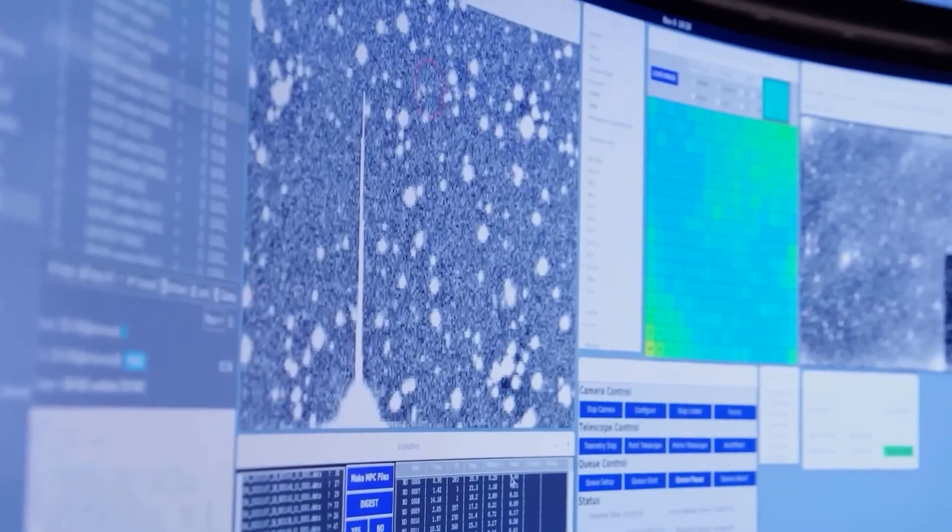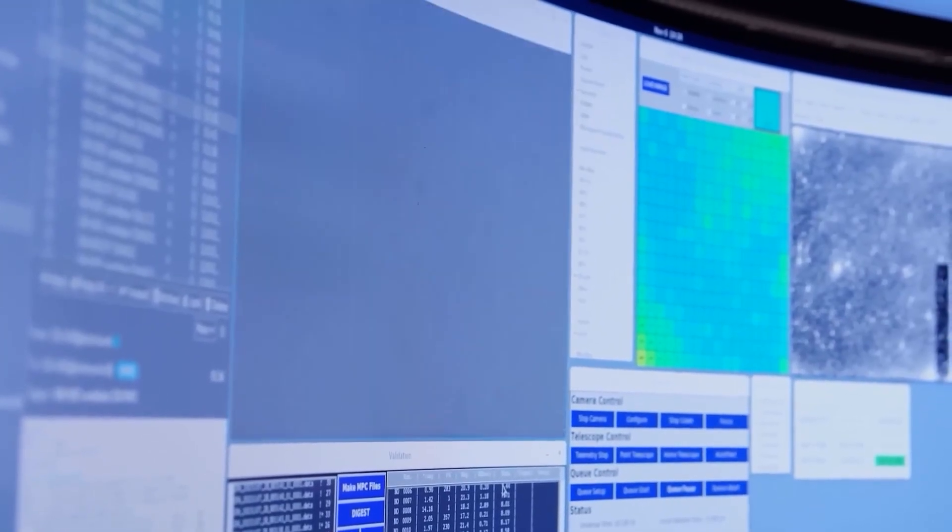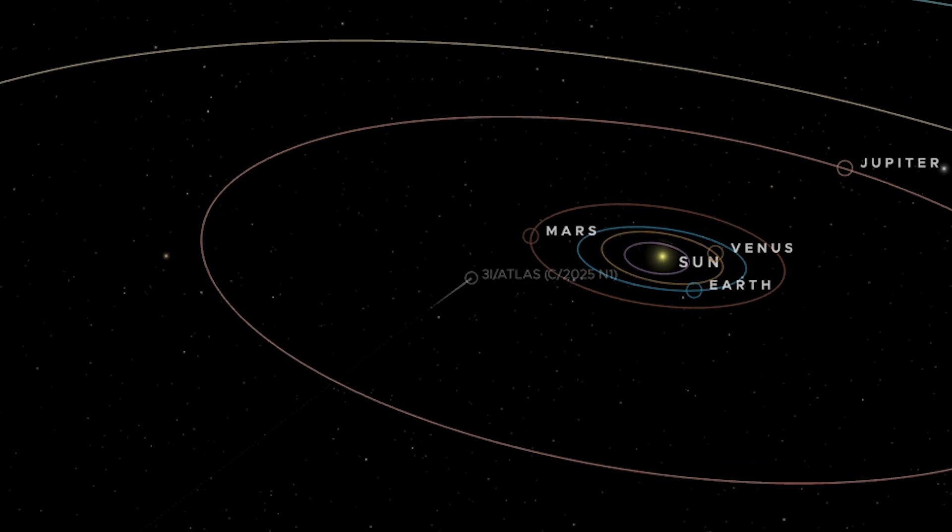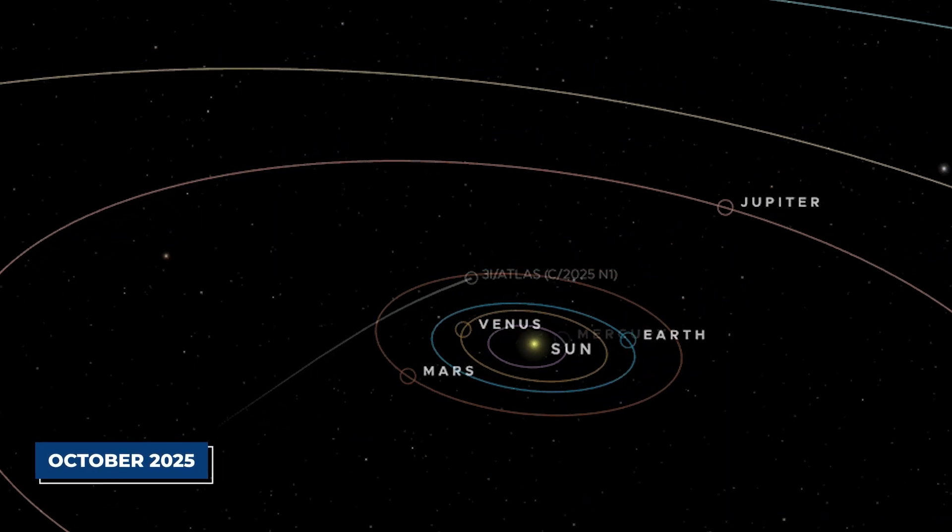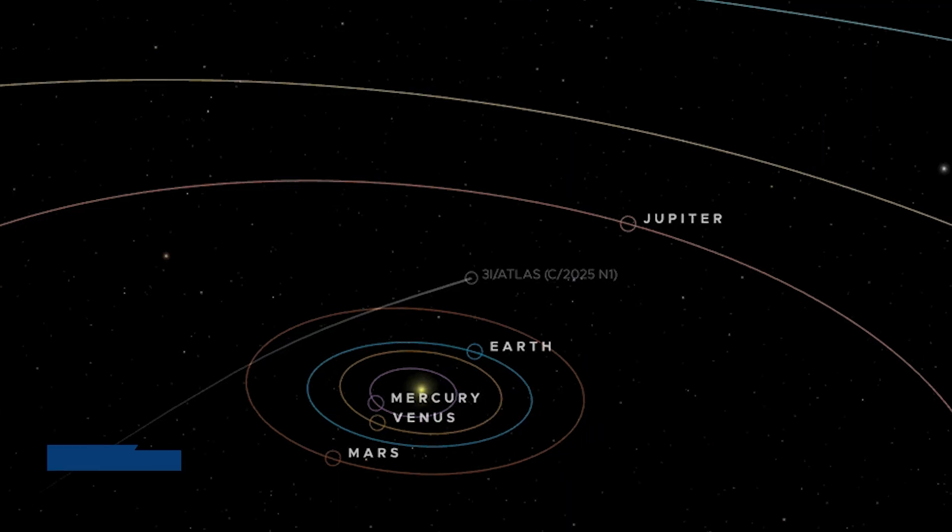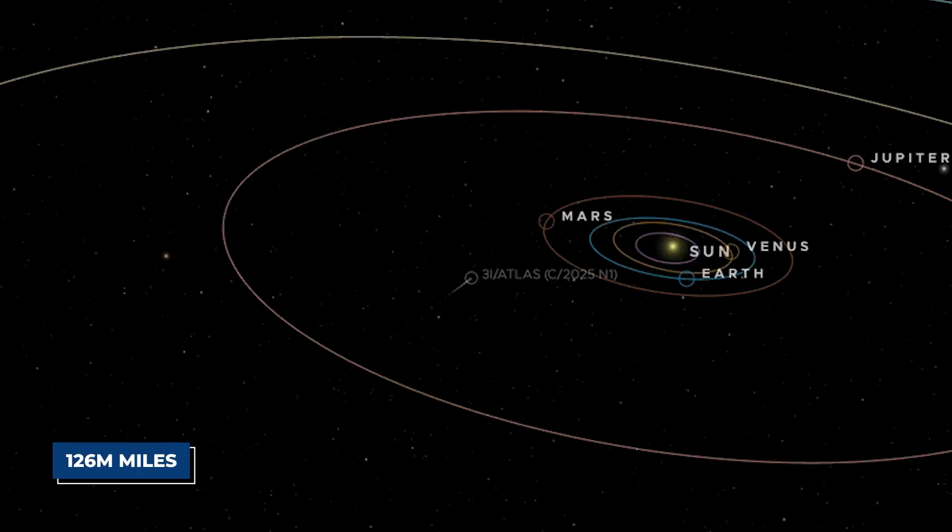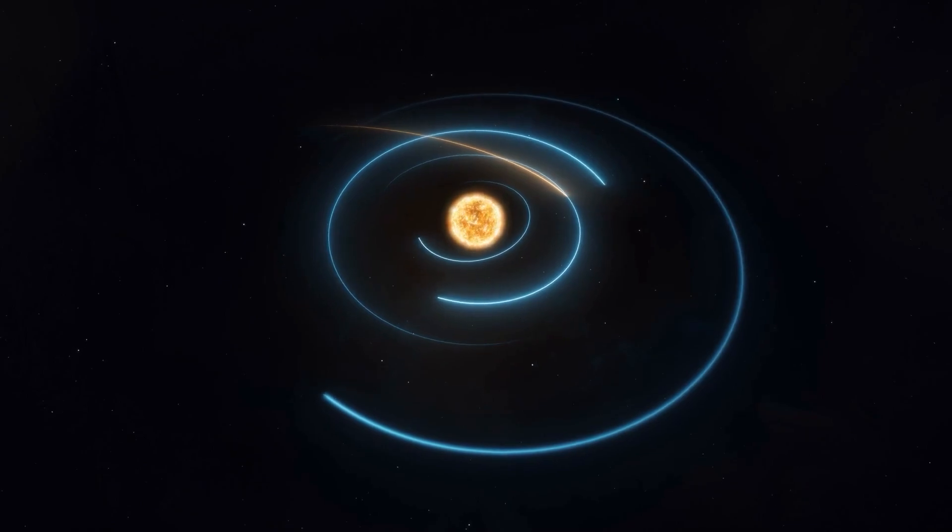It offered a rare chance for scientists to study material from outside our own stellar nursery. Its closest approach to the Sun, or perihelion, was predicted for late October 2025, at a distance of about 126 million miles, putting it just inside the orbit of Mars.